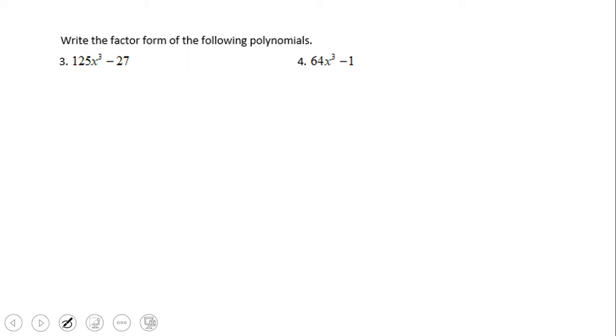These start getting a little more complicated, however we're going to use the same approach. Here I think it helps a lot if you write in this format: 5x cubed - that will be (5x)³ = 125x³. The quantity 5x raised to the third power is 125x³ minus 3³, like in the previous problem.